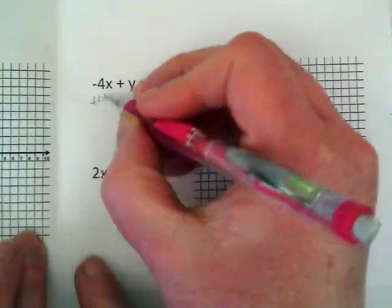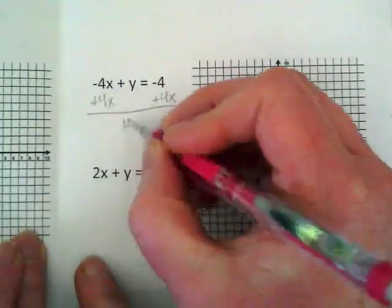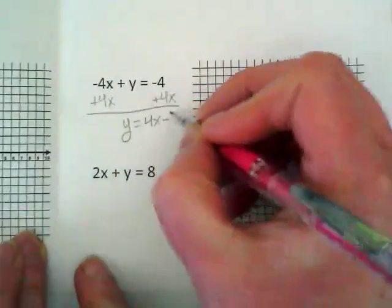In solving for y, we want to move this 4x to the other side of the equation. And we get y is equal to 4x minus 4.